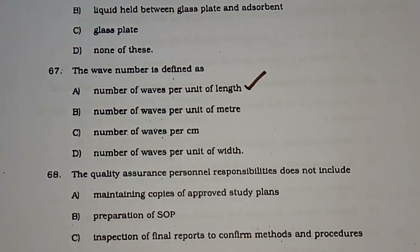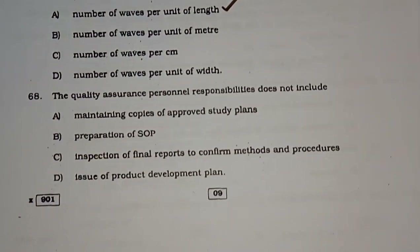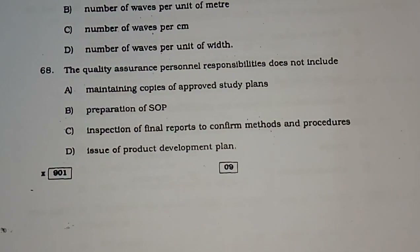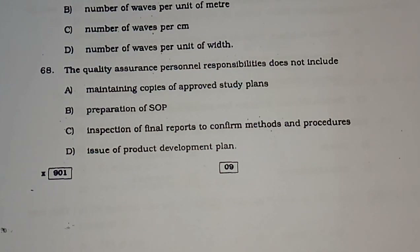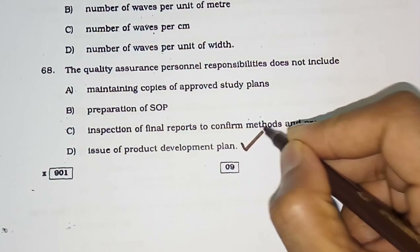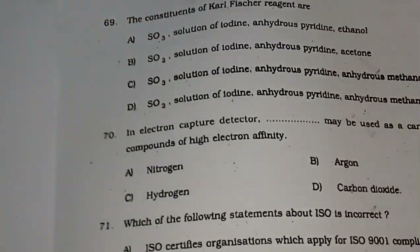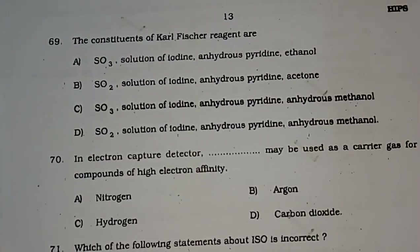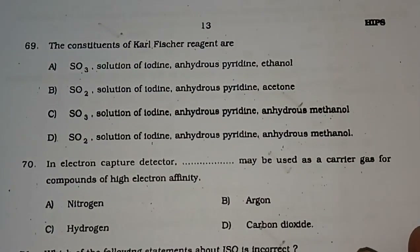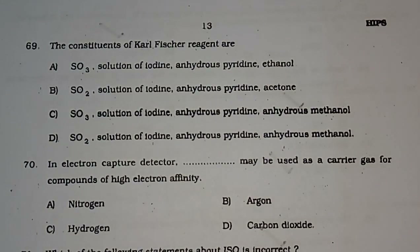Question number 68: The quality assurance personnel responsibility does NOT include — (A) maintaining copies of approved study plan, (B) preparation of SOP, (C) inspection of final reports to confirm methods and procedures, (D) issue of product development plan. The correct answer is option D.